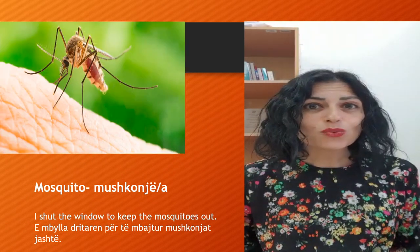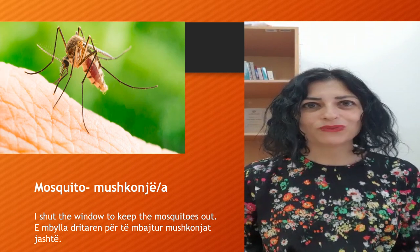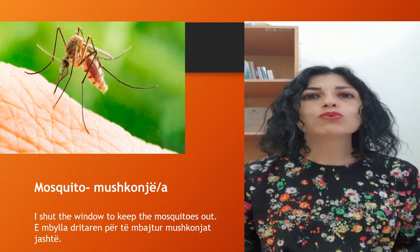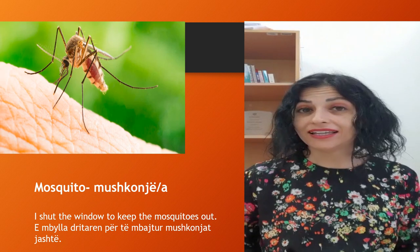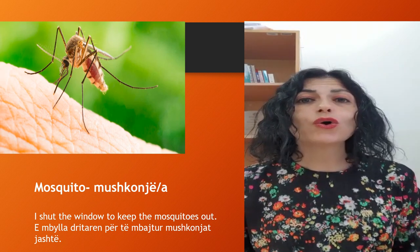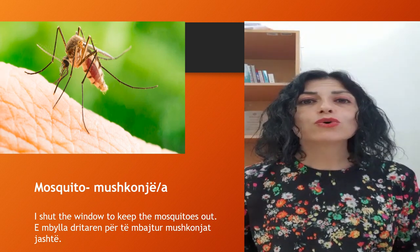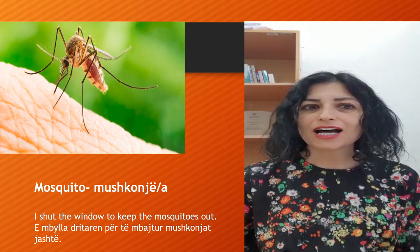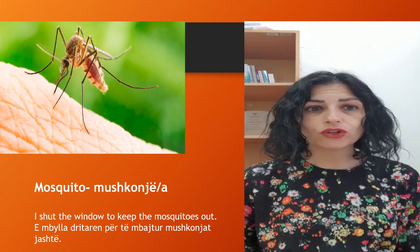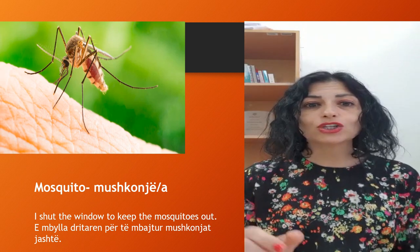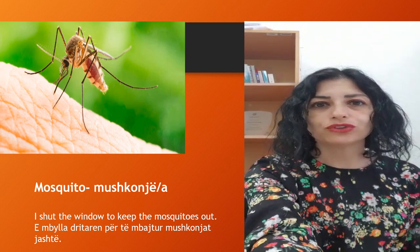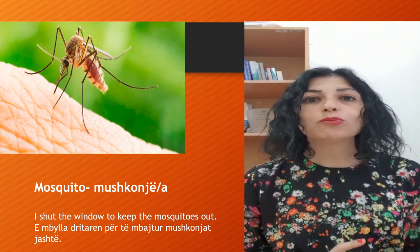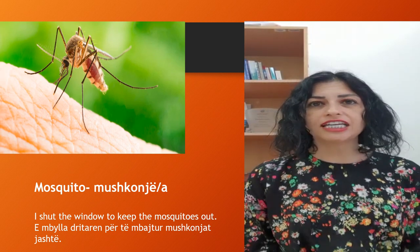The next one is mosquito. In Albanian it is mëshkonjë — definite form mëshkonjë. For example, 'I shut the window to keep the mosquitoes out.' In Albanian: mbyllë dritarën për të mbajtur mëshkonjët jashtë.